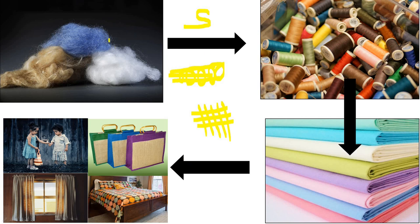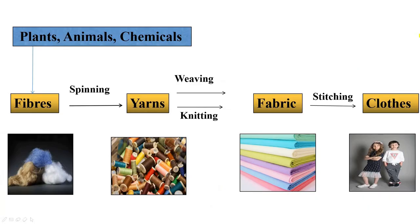So you understood the entire process? First, you get fibers from plants, animals, and chemicals. Then fibers are converted into yarns by the process of spinning. Yarns are converted into fabrics by the process of weaving and knitting. And fabrics are ultimately converted into items which you use in your daily lives. This table you have to learn — it is the most important table in the chapter.